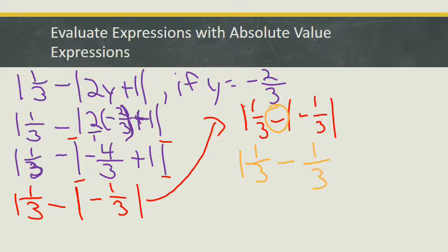So even when I bring this out, I've got the 1⅓ — I'm bringing it out as a positive, but it's telling me to subtract that number from 1⅓. So I'm bringing it out as a positive, but I've got this negative sign that I've got to keep in this expression. So now I've got 1⅓ minus 1/3, and as I evaluate this expression, it is, in fact, just 1.